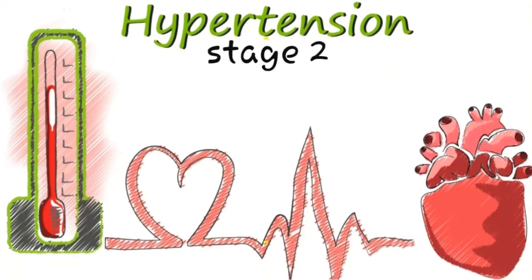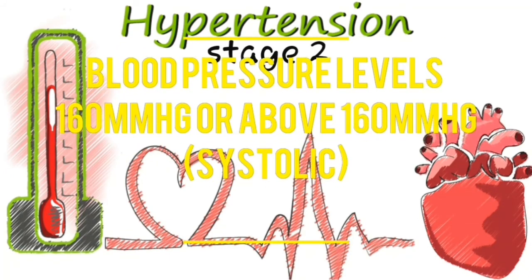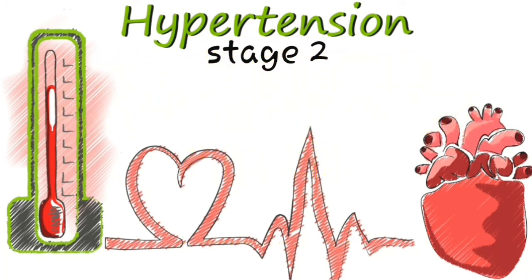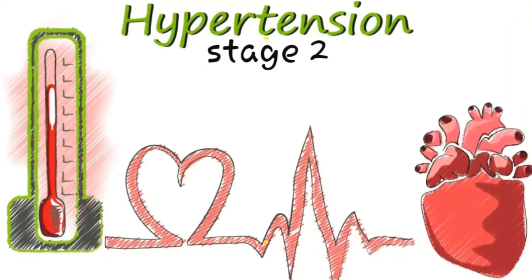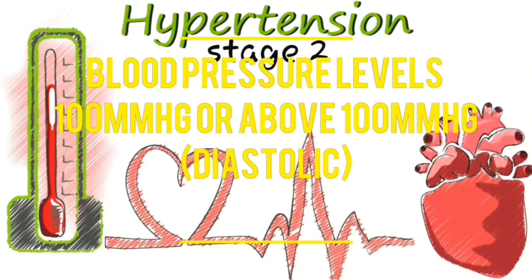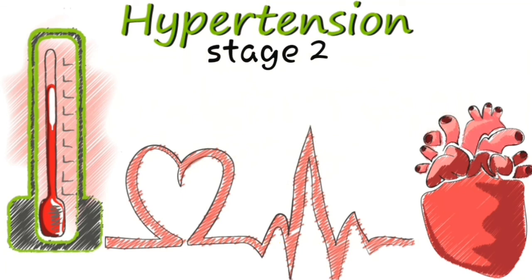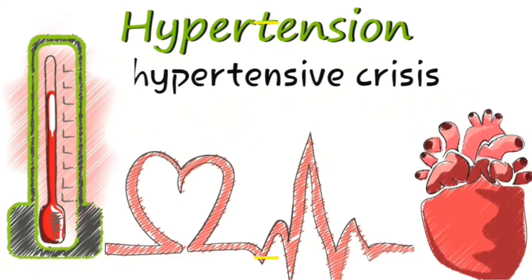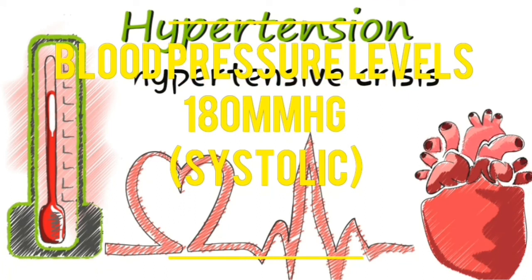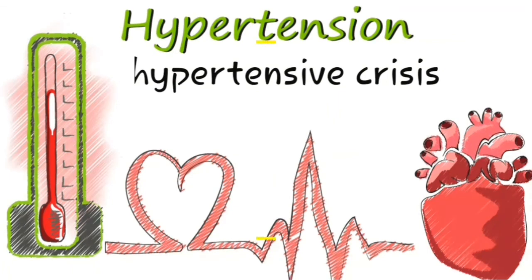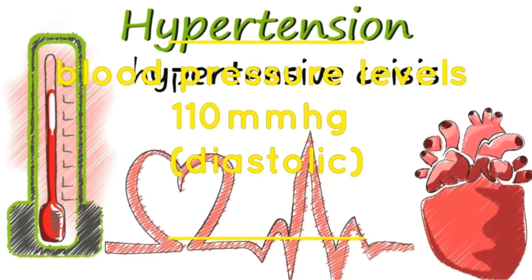Stage 2 hypertension is a blood pressure level of 160 mmHg or above systolic and 100 mmHg or above diastolic. Hypertensive crisis is a blood pressure level of 180 mmHg or above systolic and above 110 mmHg diastolic.